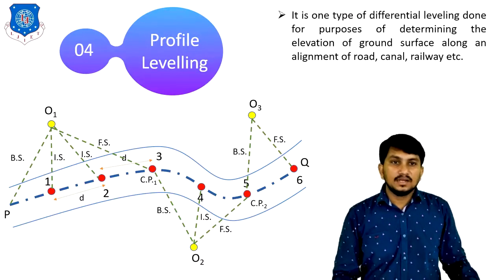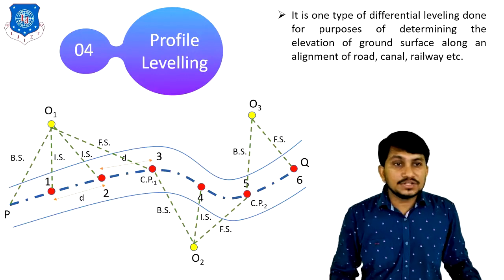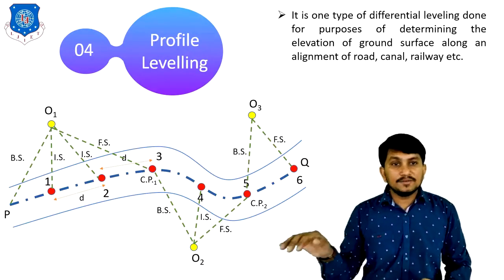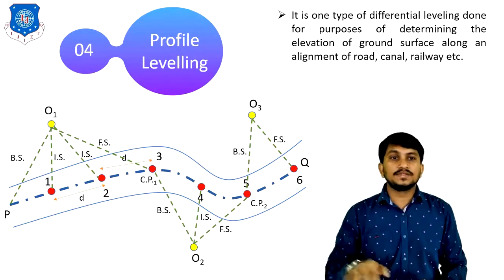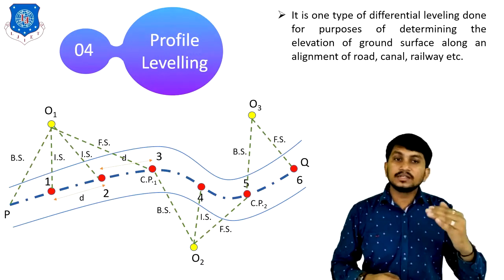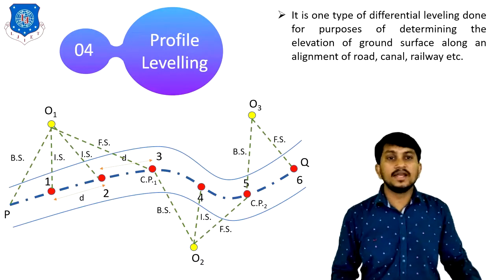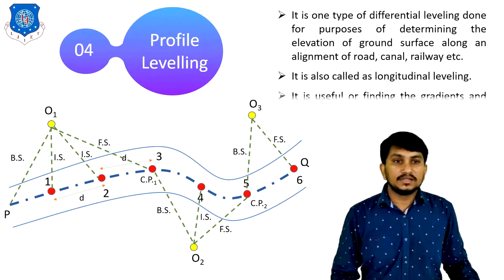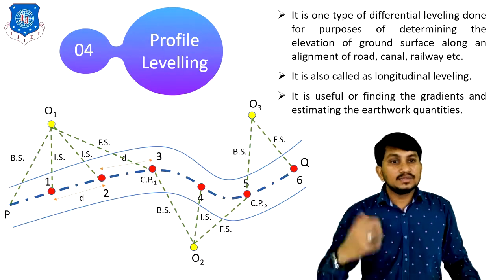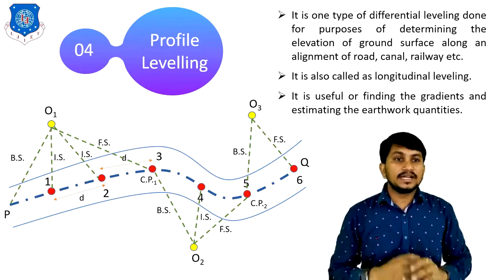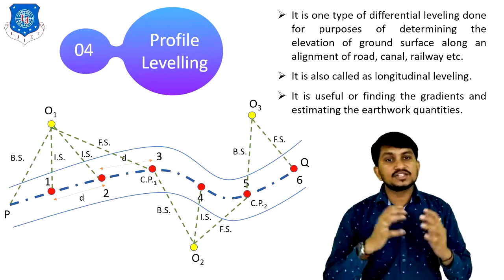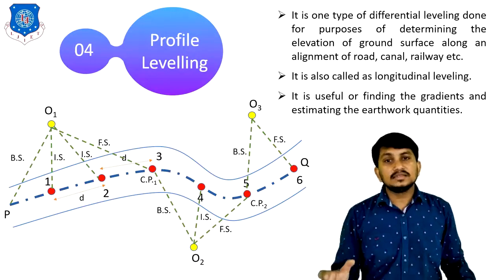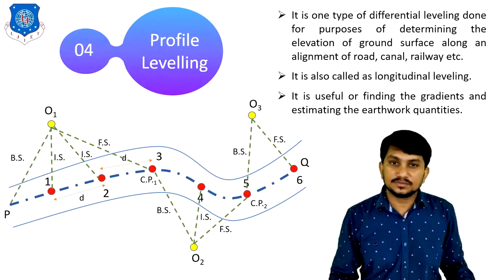Profile leveling is one type of differential leveling done for the purpose of determining the elevation of the ground surface along the alignment of a road, canal, railway, etc. It is also called longitudinal leveling. It is useful for finding out the gradients and estimating the earthwork quantities.